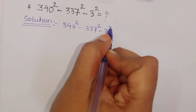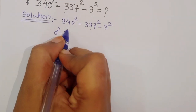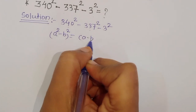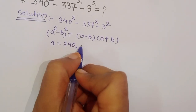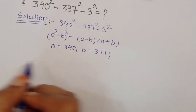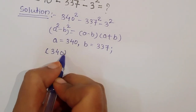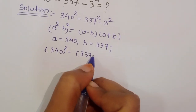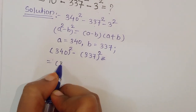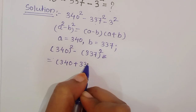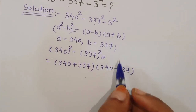Now, this is in the form a square minus b square, so we can apply the formula. The formula of a square minus b square is equal to (a minus b)(a plus b). Here we consider a equal to 340 and b equal to 337. So 340 square minus 337 square is equal to (340 plus 337) times (340 minus 337).